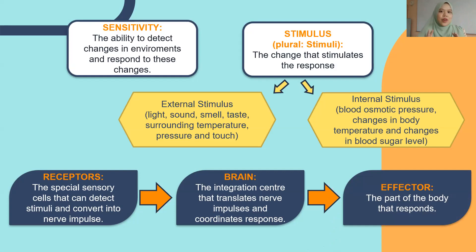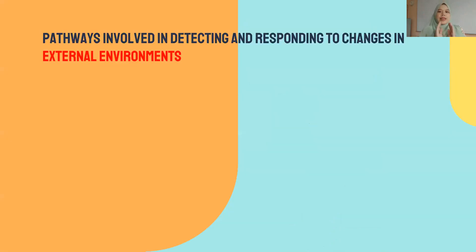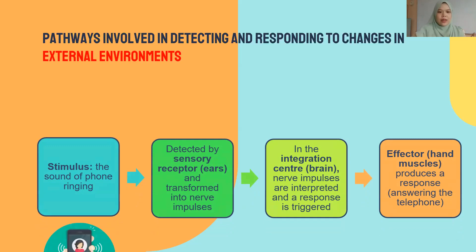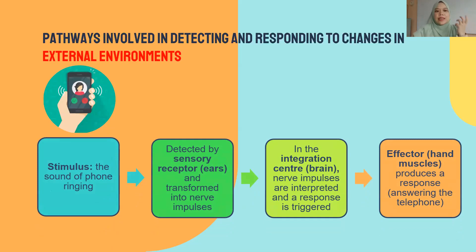Now I will tell you the example of external stimulus. This is the pathway involved in detecting and responding to a change in the external environment. For example, say all of you have a phone — let's say your phone rings. The sound from the ringing is actually the stimulus. This sound will be detected by your sensory organ, which is the ears.